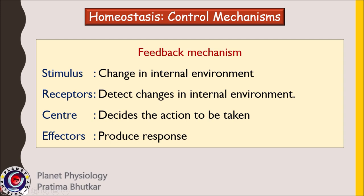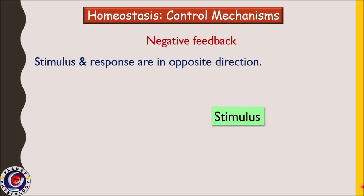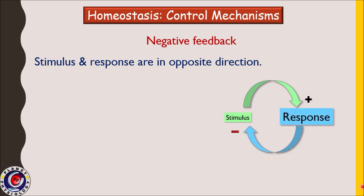Now let us see what the various control mechanisms are to achieve homeostasis. In any regulatory mechanism, there is a stimulus — a change in the environment — and there are receptors to detect this change. The integrating center decides the action, and lastly the effector organs produce the response. As per the relationship between stimulus and response, these regulatory mechanisms are classified into two types: positive feedback and negative feedback mechanisms.